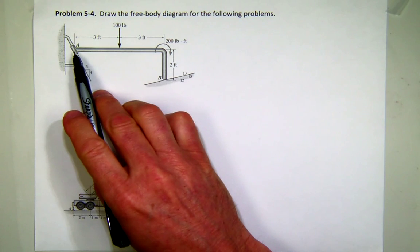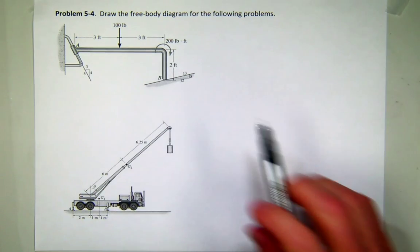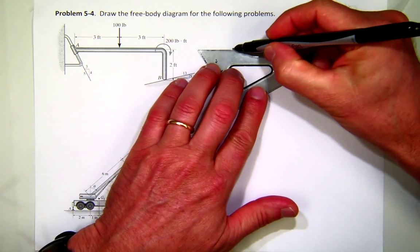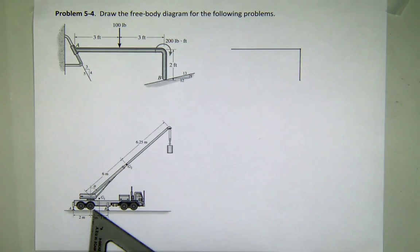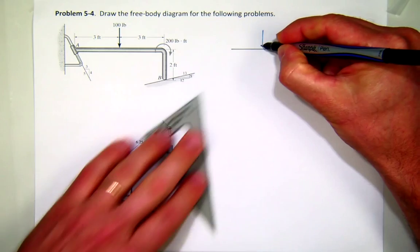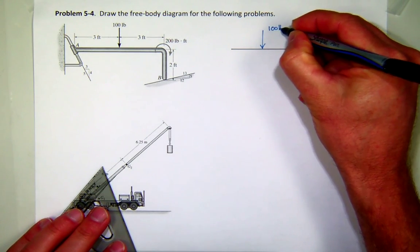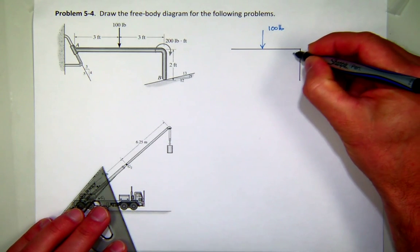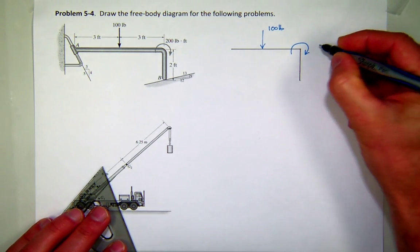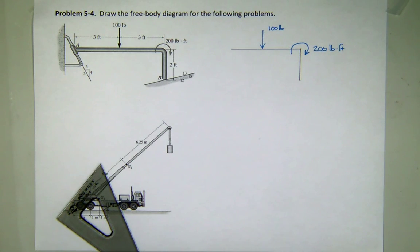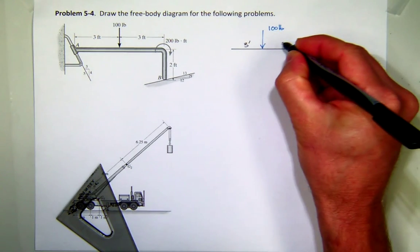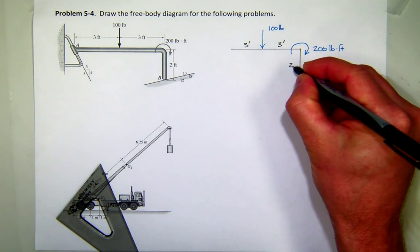In the first one, you can see the body that you're interested in would be A to B. So I'm going to idealize that by simply drawing a kind of simple line diagram. And now I'm going to put on the things that I know for sure are happening. So right here in the middle, I have an applied force of 100 pounds, and at this particular bend, this elbow, there's a moment of 200 pound feet. I'll go ahead and transfer my dimensions. So I know this is 3 feet, 3 feet, this length is 2 feet.